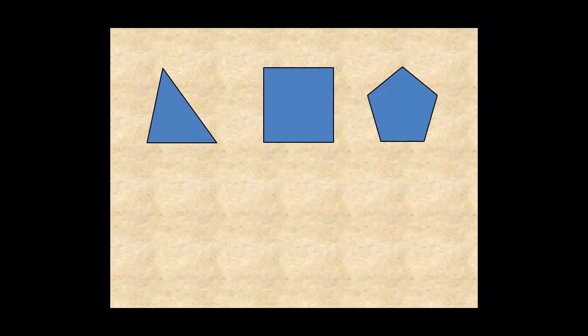From a previous lesson you already know the sum of the measures of the interior angles of a triangle is 180 degrees. For a four-sided figure like this rectangle you can draw one diagonal, dividing the figure into two triangles. So the sum of the measures of its interior angles is 2 times 180, or 360 degrees.